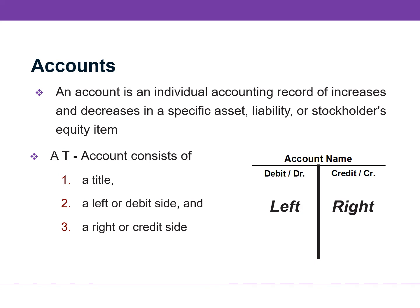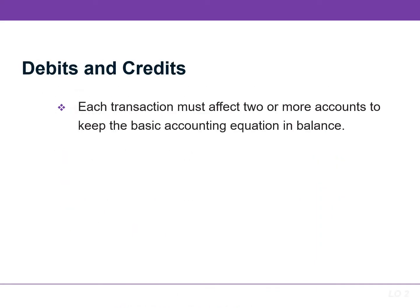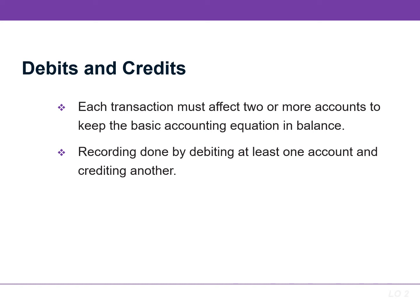We will have an account for each item listed on our chart of accounts. Each transaction must affect two or more accounts to keep the basic accounting equation in balance. So we must record each transaction by debiting at least one account and crediting another. In other words, for each transaction, debits must equal credits.